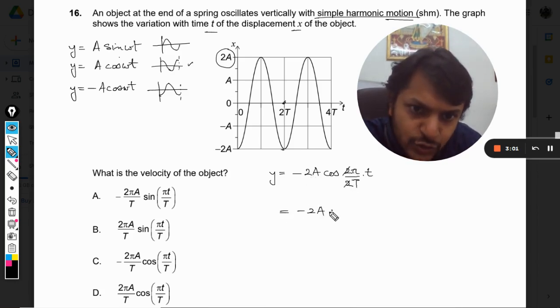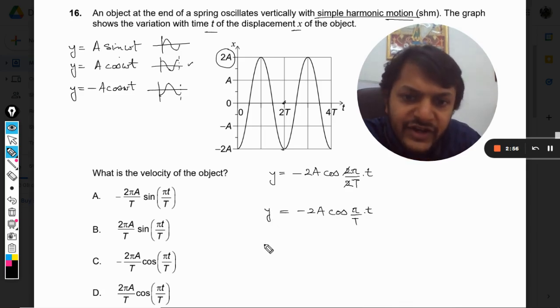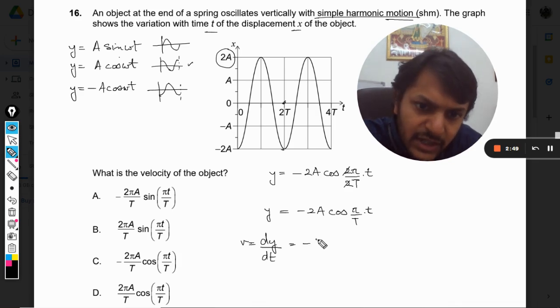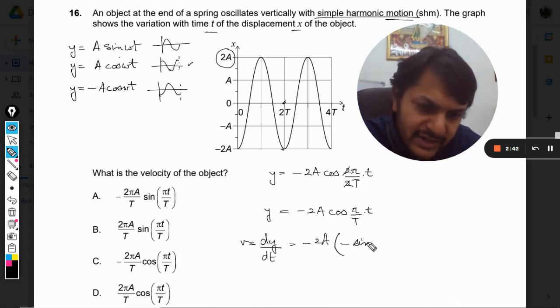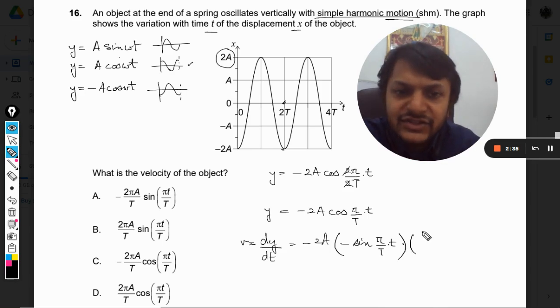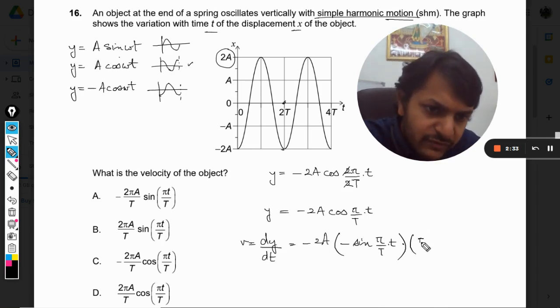It will be minus 2A cos of π by T into t. Now we can differentiate to find the velocity of the particle. So dy by dt will be minus 2A, and on differentiating cos we find minus sine, so it will be minus sine π by T into t. There will be a chain rule also applied in this differentiation, so we would be getting π by T also.